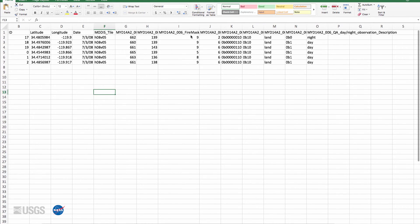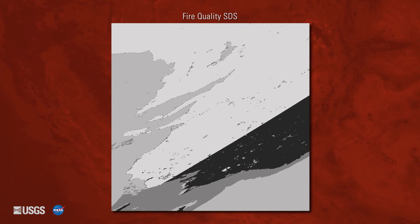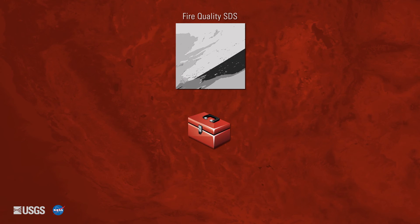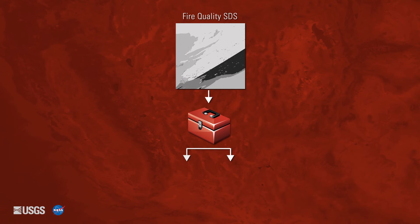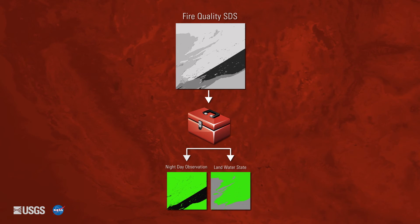The MODIS Python toolbox provides users with a simple way to decode and interact with quality layers in ArcGIS. One of the tools in the toolbox is the Decode Quality tool. This tool takes the Quality Science dataset as an input and creates individual GeoTIFF files corresponding to each bit word or quality category described in the Quality Science dataset.